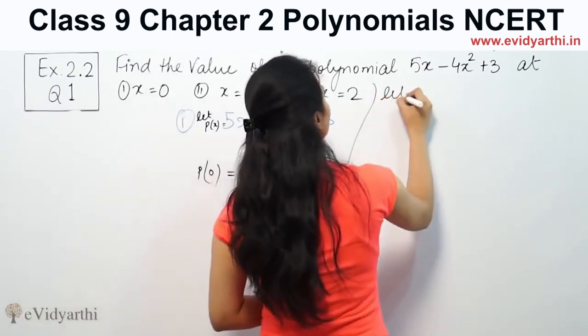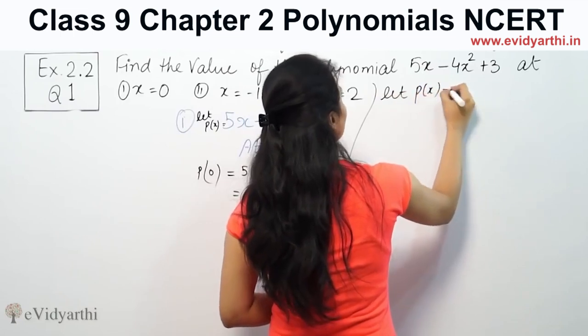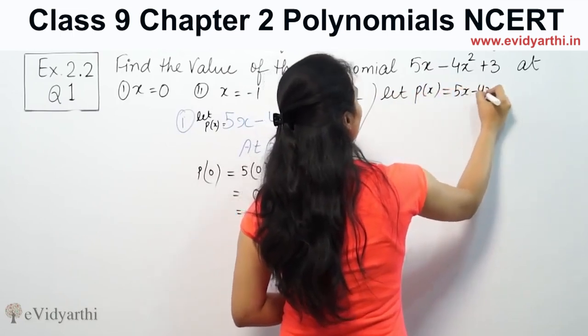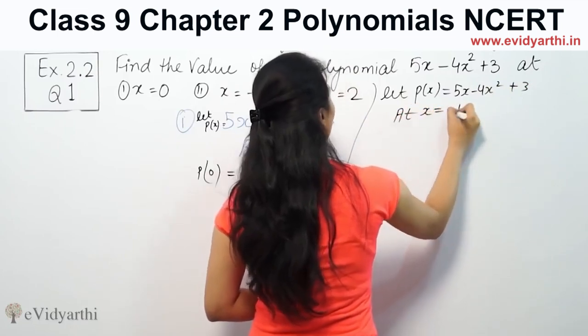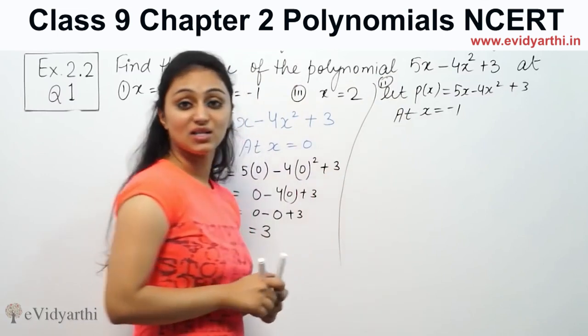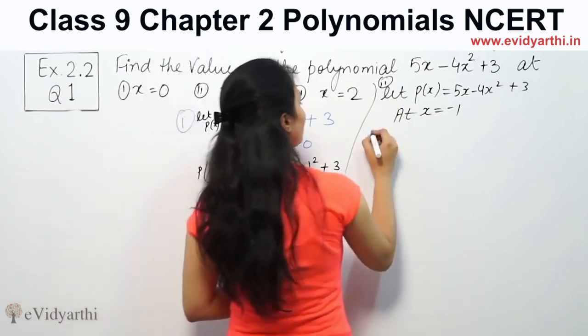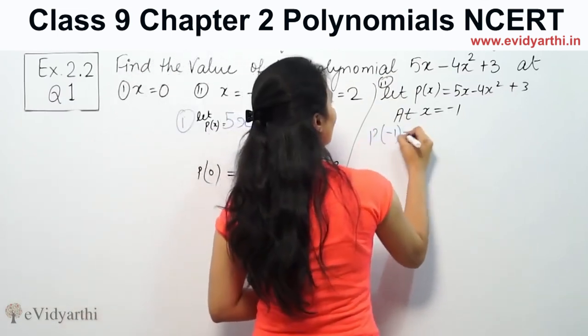Same way, I am going to find p(x) equals 5x minus 4x² plus 3 at x equal to minus 1. So I will put here p(x) equal to minus 1.